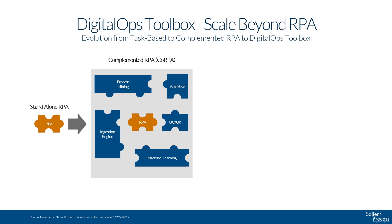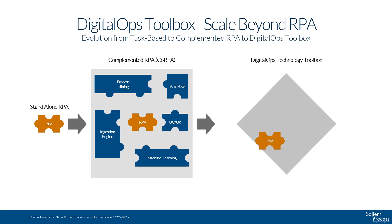We'll discuss where we believe RPA sits in upcoming slides. If you're an RPA vendor, of course that is the story you're going to tell. Now, let's look at the Digital Ops Toolbox that Gartner defines, which we have slightly modified. At the top, we have process intelligence — a term first used by HFS Research — which is a combination of data mining, process discovery, and process analysis. Document ingestion covers all those physical and digital documents still involved in many business processes that have to be ingested and digitally processed in order to accommodate automation.